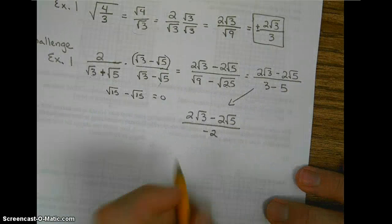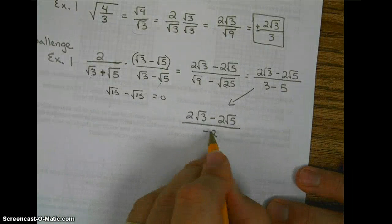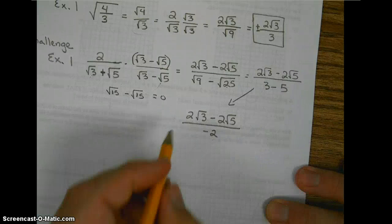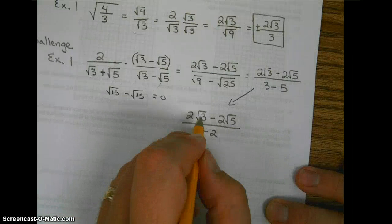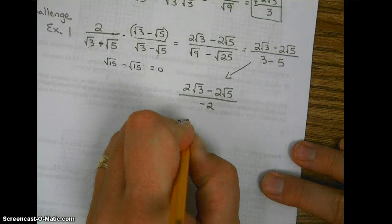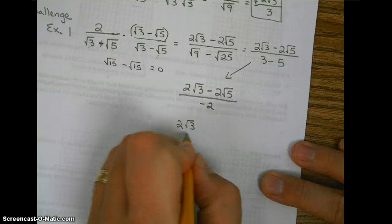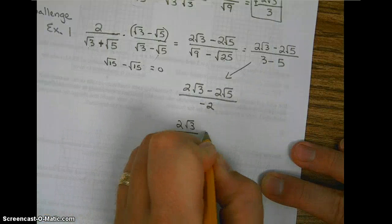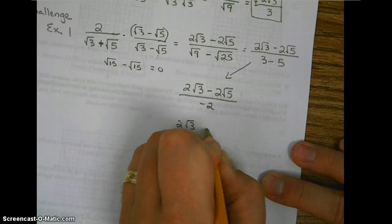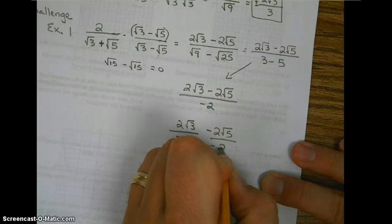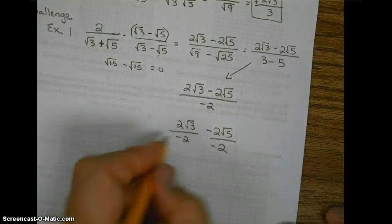Now notice we can reduce. So I could break this up into two fractions so you will see this easier. 2 radical 3 over negative 2, minus 2 radical 5 over negative 2. So those cancel,